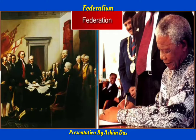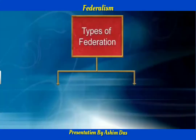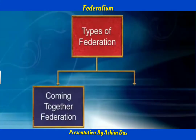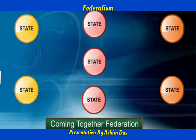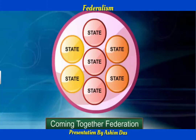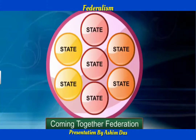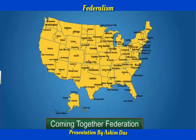There are two ways in which federations can be formed: coming together federations and holding together federations. In coming together federations, independent states come together on their own to form a bigger unit, so that by pooling sovereignty and retaining identity, they can increase their security.